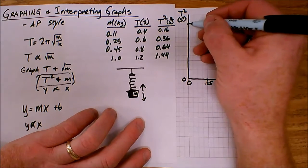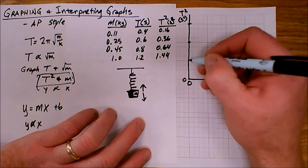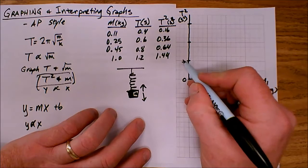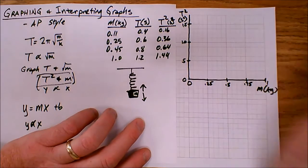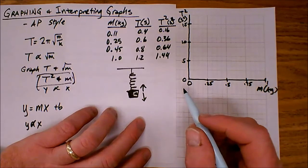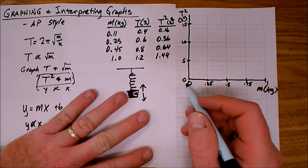And the T squared is going to scale from 0 to, looks like about 1.5. So I'm just going to go, because I've got nice graph paper here, I can get some pretty easy divisions there. So that's 0.5, 1.0, and 1.5, like so. So I've drawn, labeled, and scaled axes.